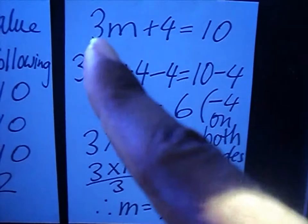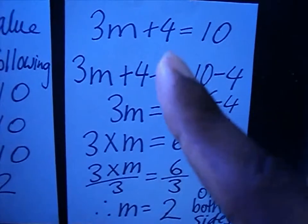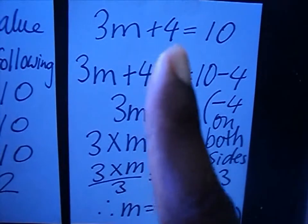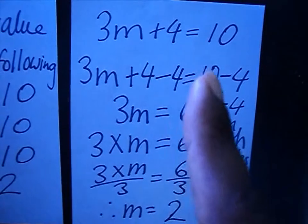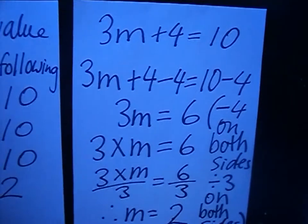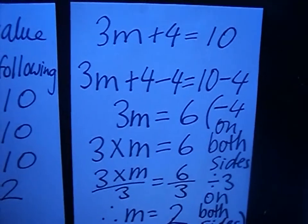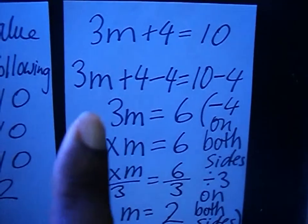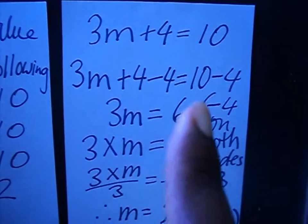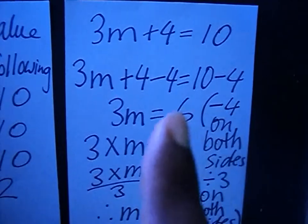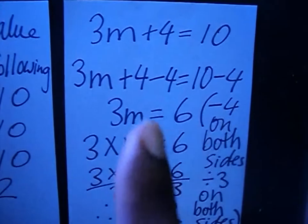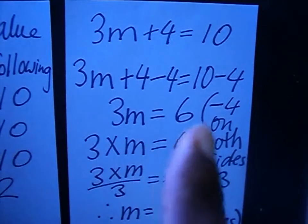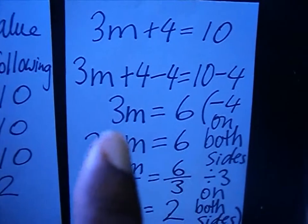Get rid of the four first, and then the three. Do not get rid of the three first — no, you should get rid of the four first, then the three. So you have 3m plus 4 minus 4 is equals to 10 minus 4. You subtract 4 on both sides to get rid of the four, so you have 3m is equals to 6.